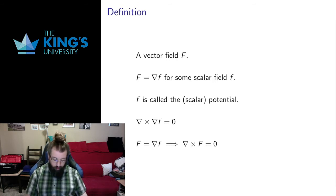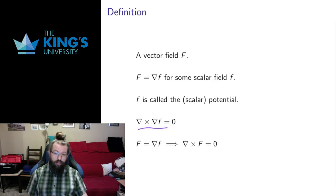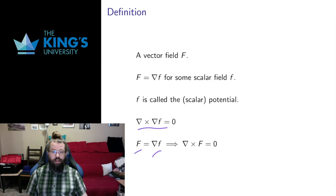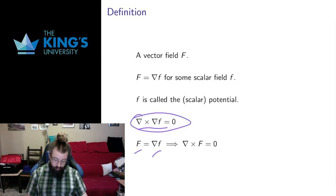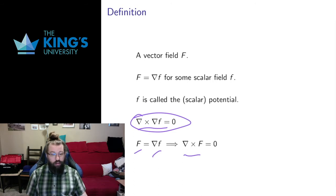From previous videos, the curl of a gradient is zero. So since a conservative vector field is the gradient of some scalar field, the curl of a conservative vector field must be zero.